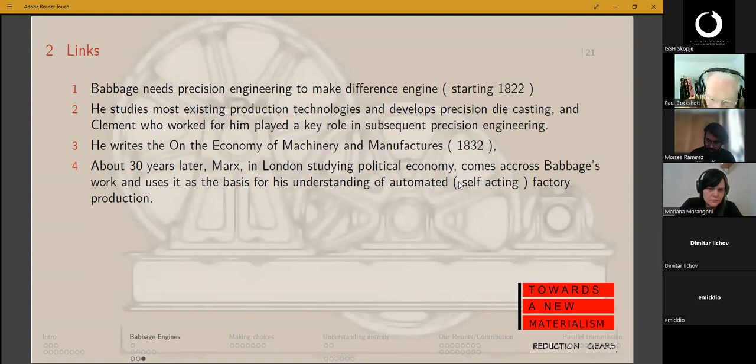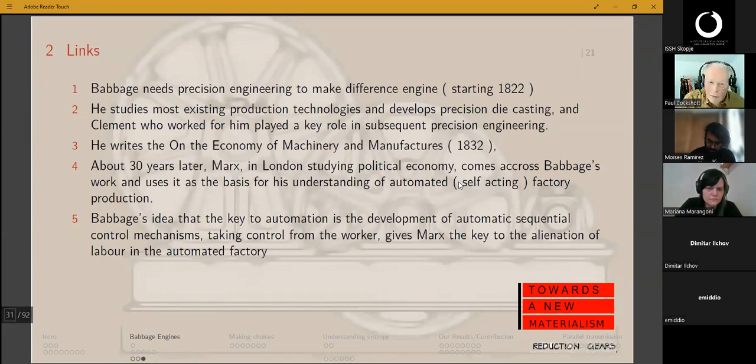Now, people tend to think that automation is something new. That it is late 20th, 21st century development. Part of that is just a change in language. In the 19th century, these were described as self-acting machines. Now you'd call them automatic. But self-acting and automatic just involve shifting Germanic to Greek terminology in English. Babbage's idea was that the key to automation is the development of automatic sequential control mechanisms, taking the control from the worker. And this gives Marx the key to the alienated labor in the automatic factory.